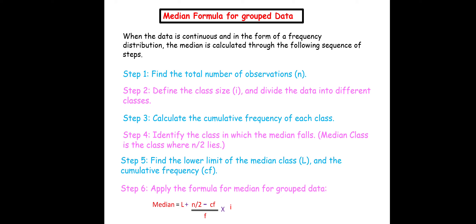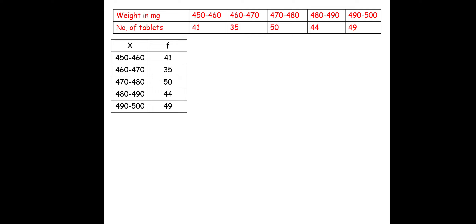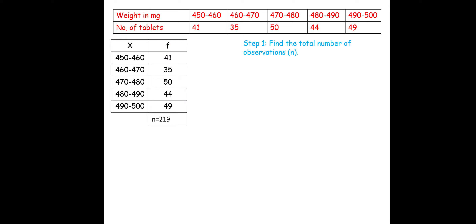We have an example with weight in mg: 450–460, 460–470, 470–480, 480–490, 490–500, and number of tablets. We rewrite the table with x and F values. Step 1: find total N by adding all frequencies: 41 + 35 + 50 + 44 + 49 = 219.